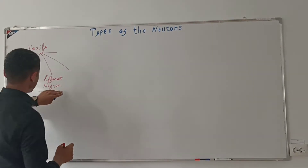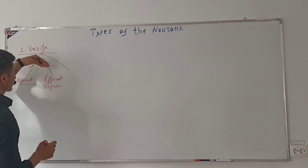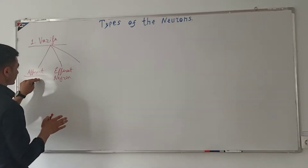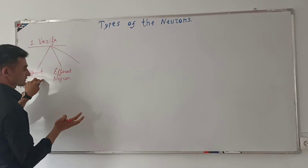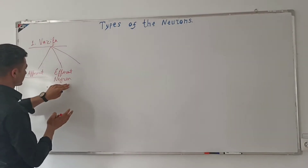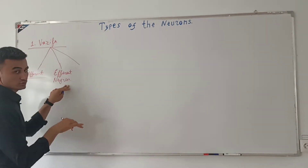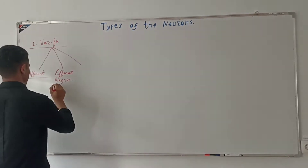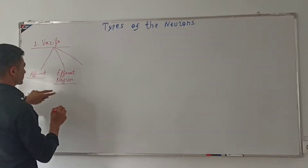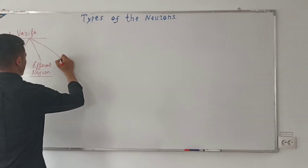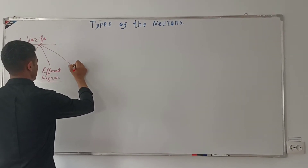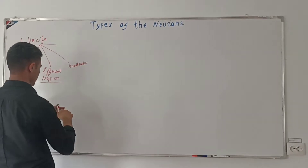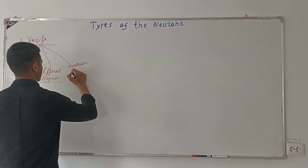Afferent neyronlar markazga intiluvi neyronlar deb ataladi. Afferent neyronlar tashqi ta'sirotni qabul qilib markazga jo'natadi. Efferent neyronlar esa markazdan jo'natilgan buyruqni ijrochi organga olib borib beradi.